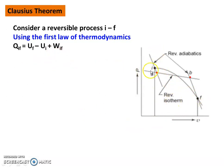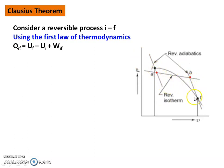Now we draw reversible adiabatic lines through I and through F. I-A is a reversible adiabatic line; B-F is a reversible adiabatic line. We locate points A and B on these reversible adiabatic lines, and connect A and B such that the area under I-F equals the area under A-B. That is the condition — the work done by the I-F process equals the work done by the A-B process. The A-B process is a reversible isothermal process.